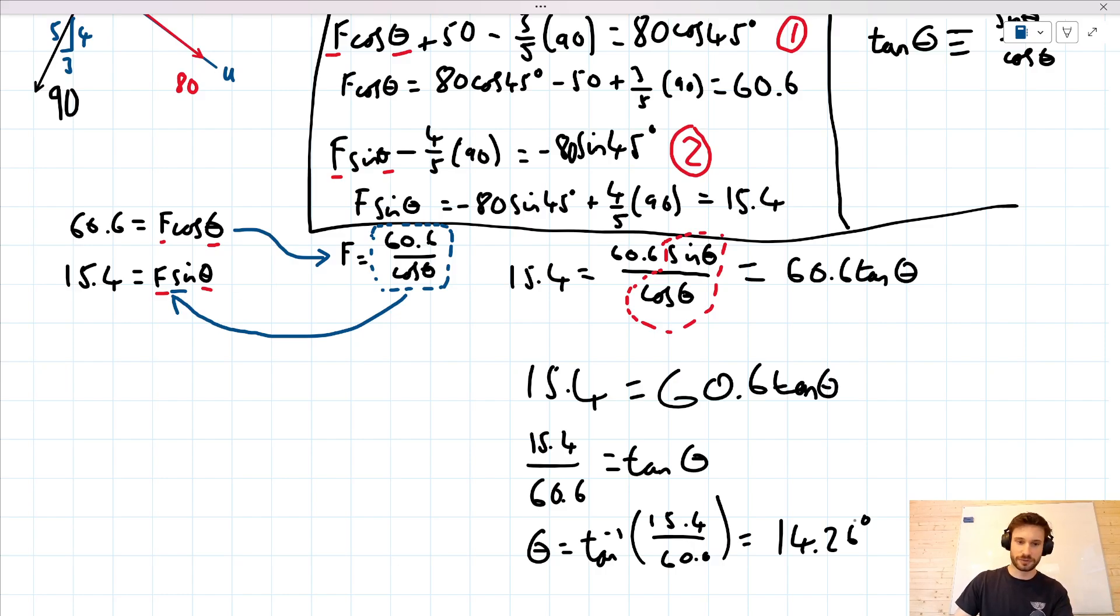Are we done? No. We still have one more unknown to solve for, this F. What's convenient about the substitution method is that you always end up deriving an equation that expresses one of the unknowns in terms of the other. So we've got this F equals 60.6 over cos theta. And we now know that theta is equal to 14.26. So we can say then, F is equal to 60.6 over cos of 14.26. Which when you bang in your calculator, you'll find gives a value of 62.5.